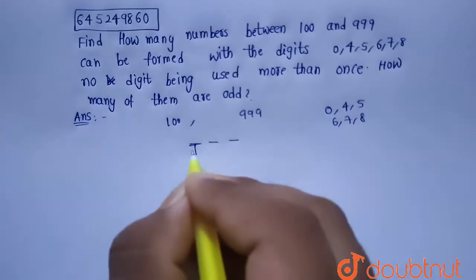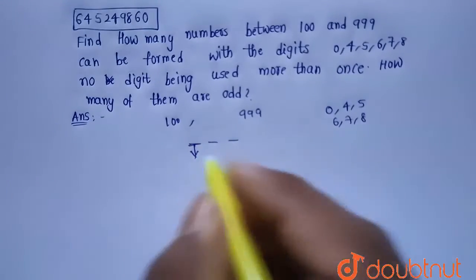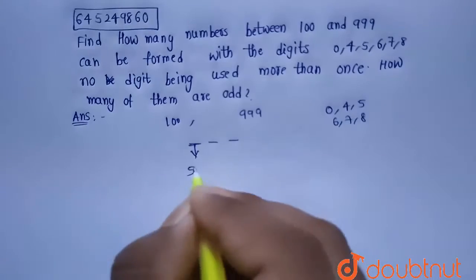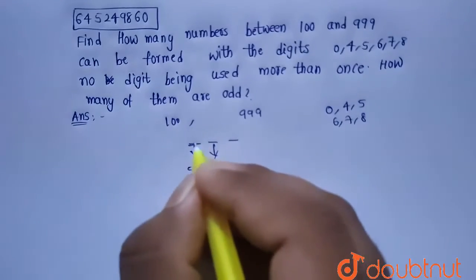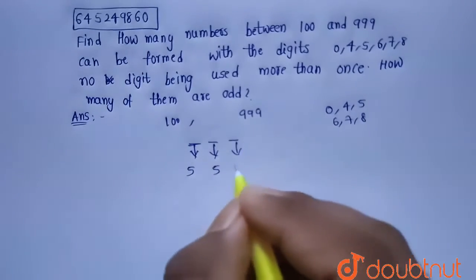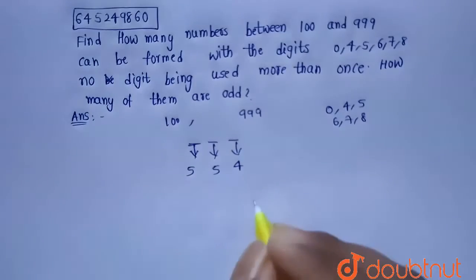Now coming to the first place, the first place cannot have zero because the given number is a 3-digit number, not a 2-digit number. It can have the remaining numbers, so it will have five chances. And coming to the second place, it will have five chances because it cannot take the number which is present in the first place. And coming to the third place, it will have four chances because it cannot take the numbers which are in the first and second place.